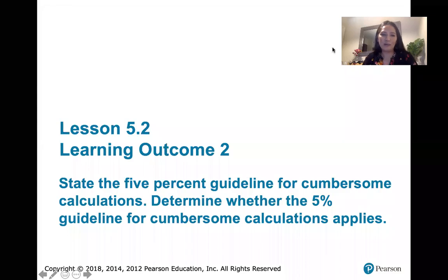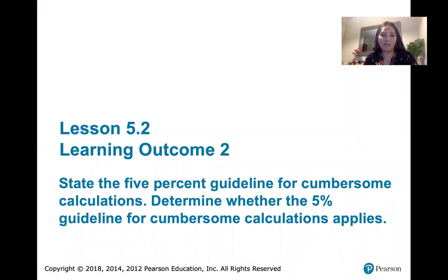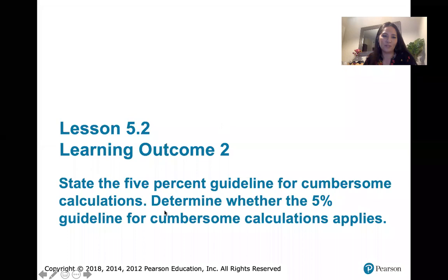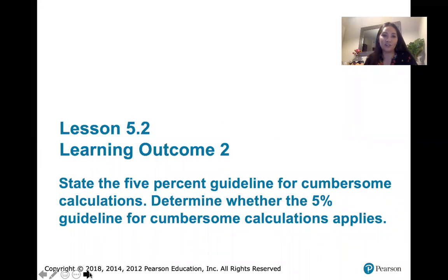In this video, we talk about learning outcome number two from lesson 5.2, which is all about the 5% guideline for cumbersome calculations. We've actually talked about this before; we're just talking about it in a new context. After we revisit that 5% guideline, we're going to determine whether it applies to a particular procedure.